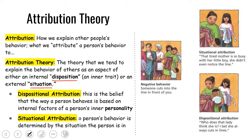People act a certain way because of either their disposition — who they are, traits that they have — or because of the situation they are in. If you think about your own life, in certain situations you act differently. You could be the sweetest person ever, but if you get a really bad grade or lose your job, that day or that week you might just become a huge angry grump. So the way you act could be determined by the situation. Dispositional attribution is saying that a person acts a certain way because that's who they are — the traits they have lead to them acting or thinking this way.